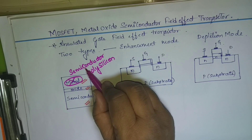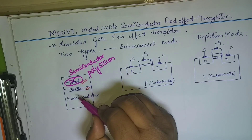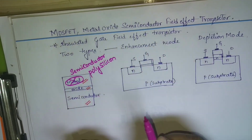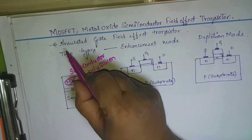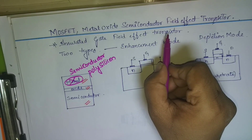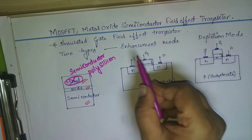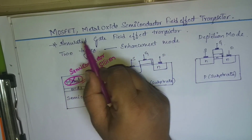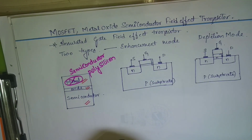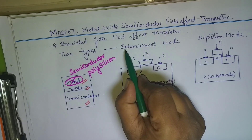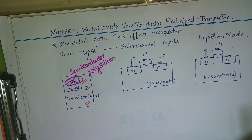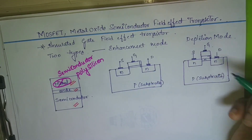The metal oxide semiconductor name remains as it is; the only change is they have replaced the metal with a semiconducting material called polysilicon. These metal oxide semiconductors are also called Insulated Gate Field Effect Transistors. MOSFETs are classified into two categories: the first one is enhancement mode, and the other one is depletion mode.